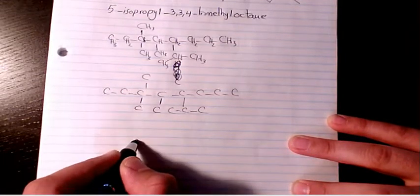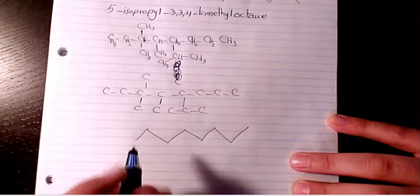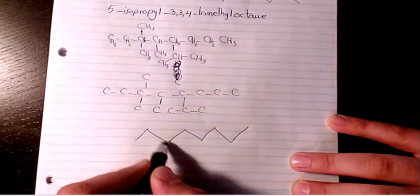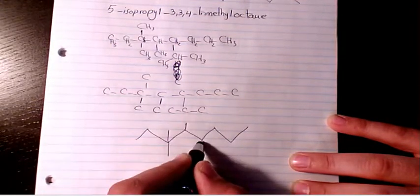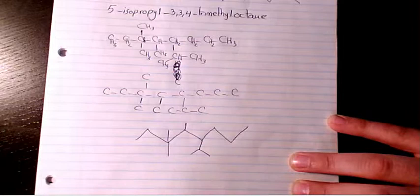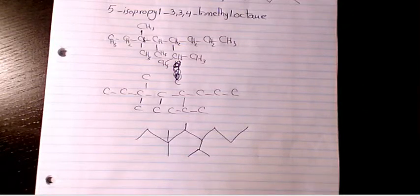And here if I want to show it in condensed form, we have one through eight carbons, then we have positions three and three like that, four-methyl, and five-isopropyl. You can show it like that. So that's 5-isopropyl-3,3,4-trimethyloctane.